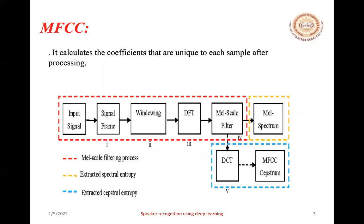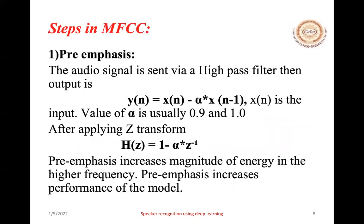These are the steps involved in MFCC feature extraction. It calculates coefficients that are unique to each sample after processing. First, the pre-processed audio signal is given as input. To obtain the MFCC spectrum, we perform signal framing, then windowing, then DFT (Discrete Fourier Transform), then Mel scale filter bank is applied, then DCT (Discrete Cosine Transform), and finally we obtain the MFCC feature set. In pre-emphasis, the audio signal is sent through a high-pass filter, which increases the performance of the model.